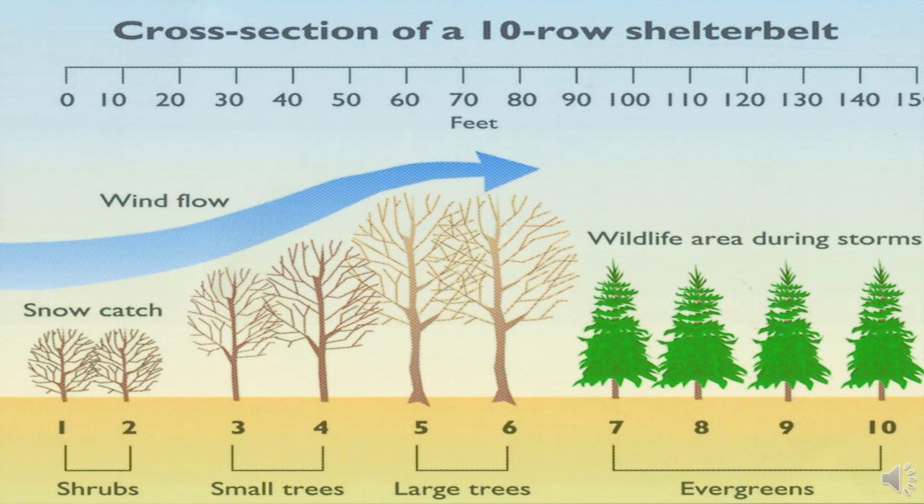Here we have shown a picture of the cross section of a 10-row shelter belt. The first and second rows are shrubs, then third and fourth rows are small trees, fifth and sixth rows are large trees, and from seventh to tenth row there are wild area and evergreen plant hedges. When wind blows, the shelter belt works as a barrier, and the air moves upward, resulting in gradual reduction in wind velocity and speed.